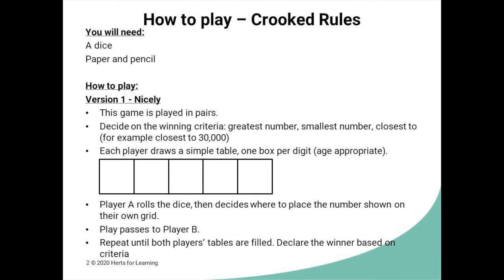This is version one: Nicely. First thing to do is decide on the winning criteria. Is the winner going to be the person who creates the greatest number, smallest number, or if you're up for a challenge, closest to a target number? Each player then draws a simple table with one box per digit. This can be adjusted to be age appropriate. More guidance on what is age appropriate according to the national curriculum can be found in the adaptation section of this video.